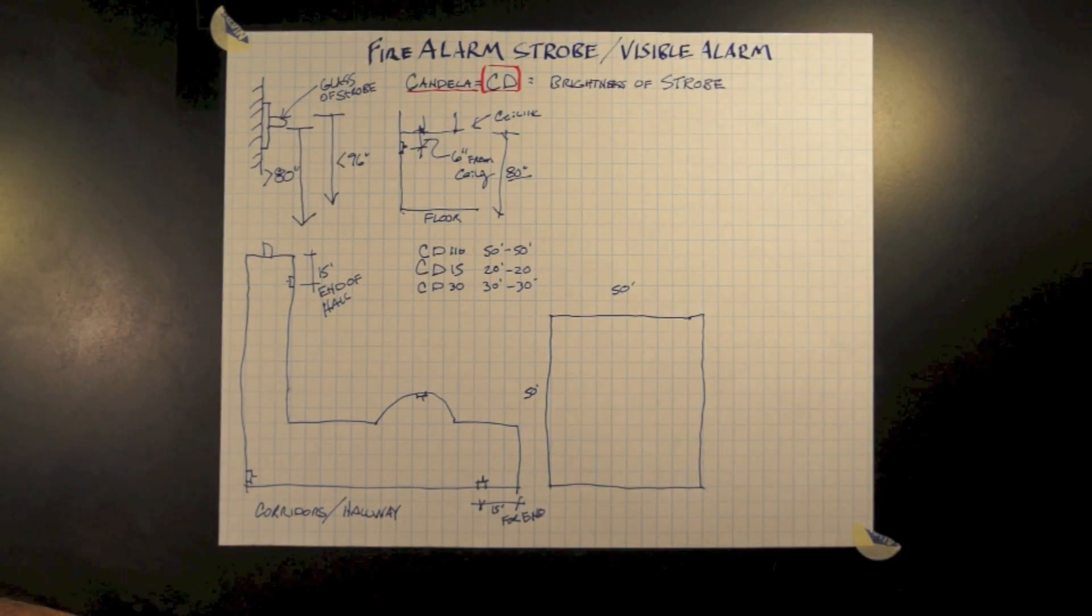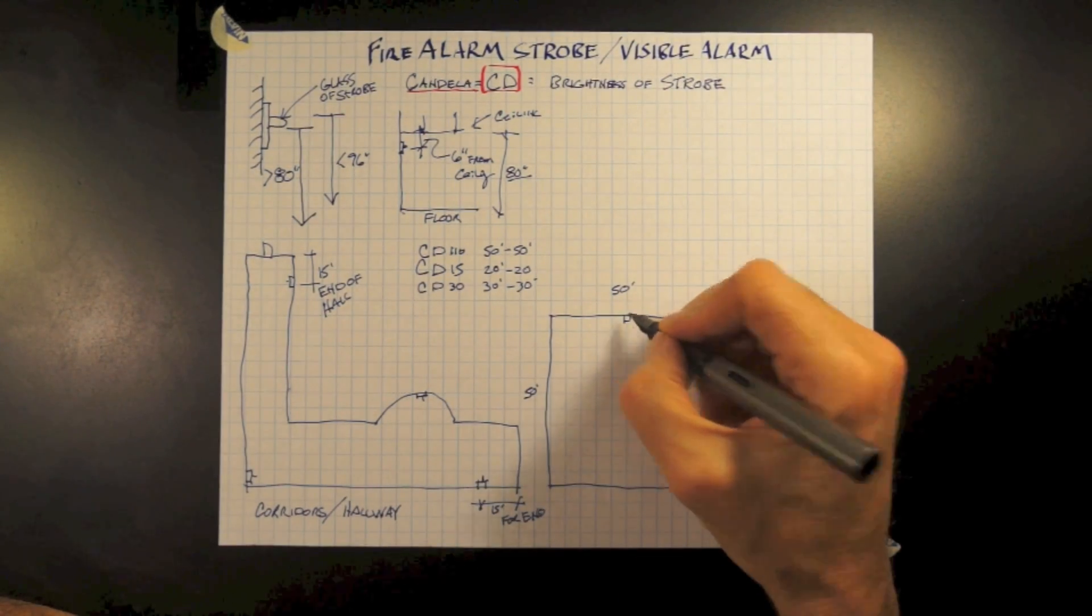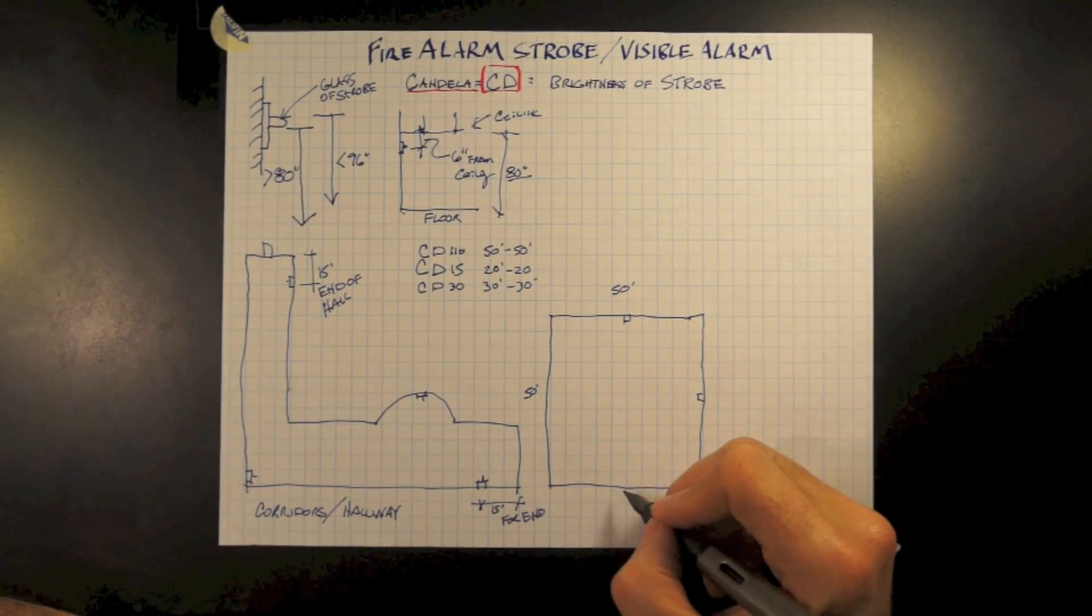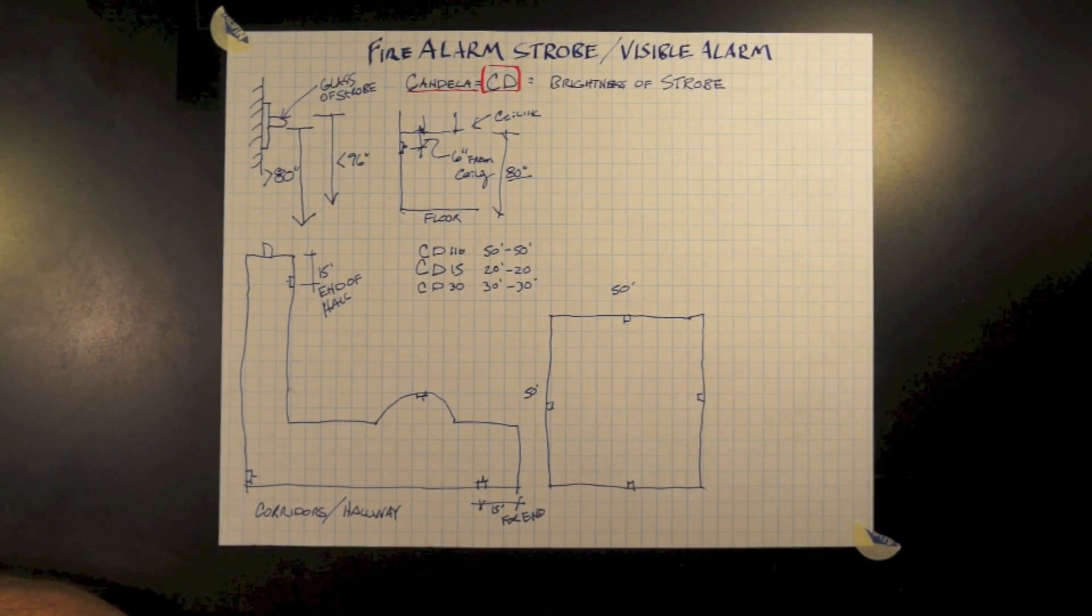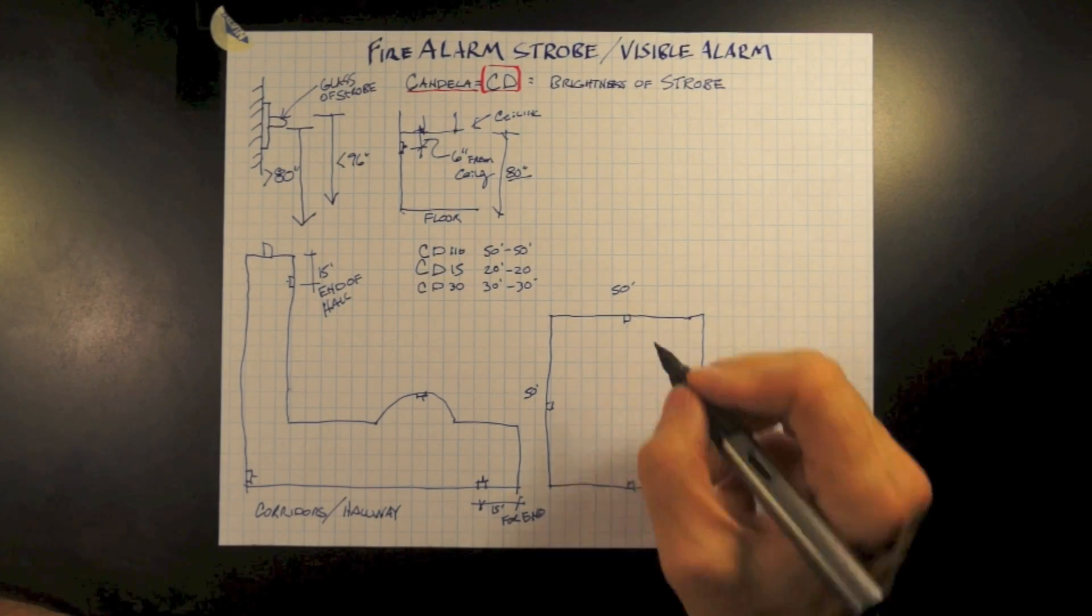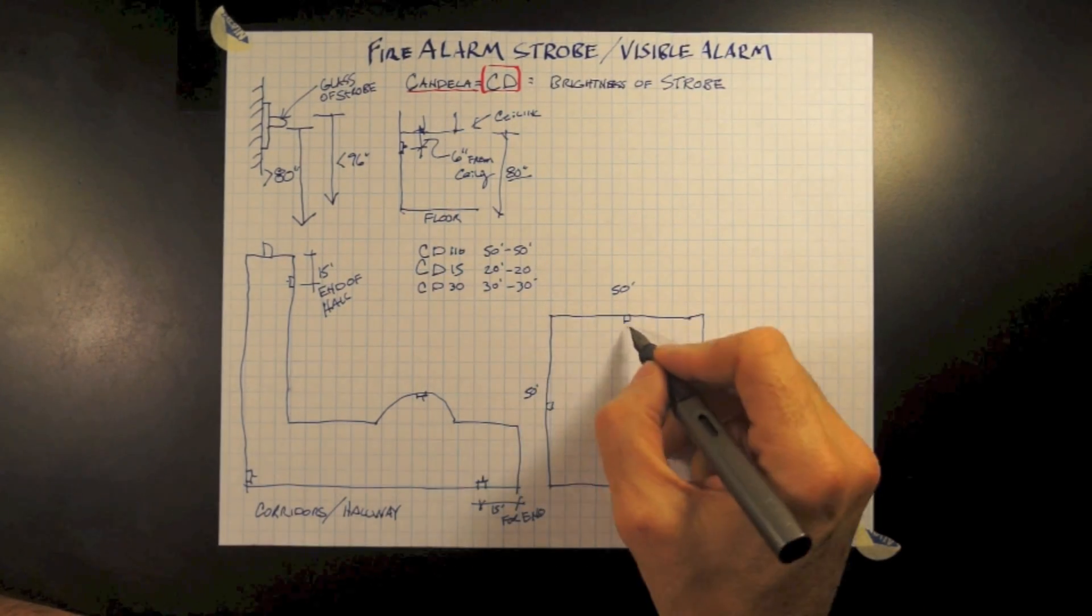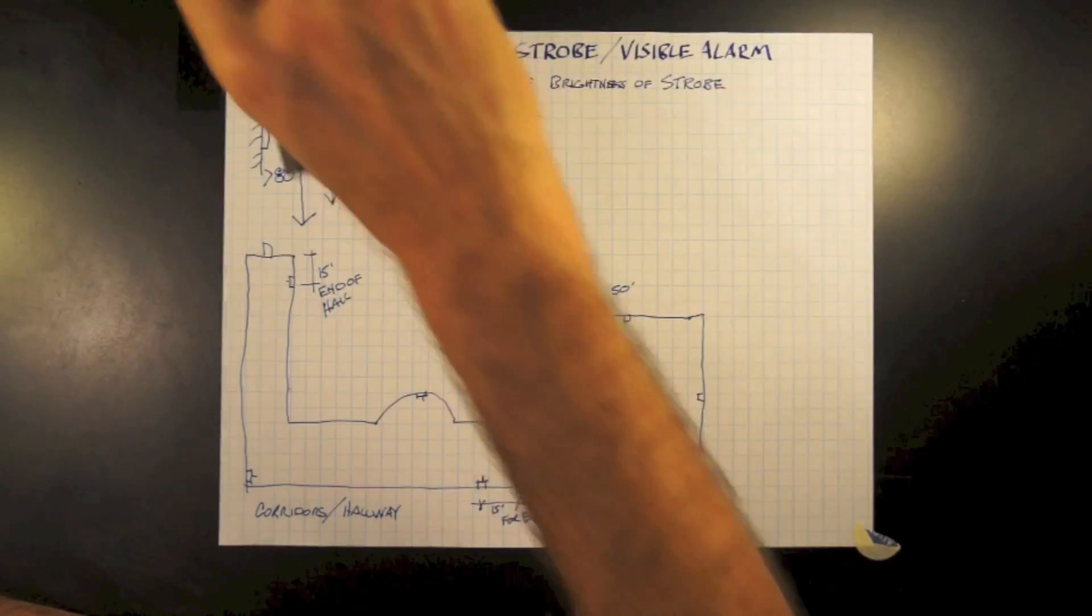Let's understand room layout of strobes as well. With a candela of 30 and a room size of 50 feet by 50 feet, this candela just happens to coincide with its actual footage coverage. None of the others do.